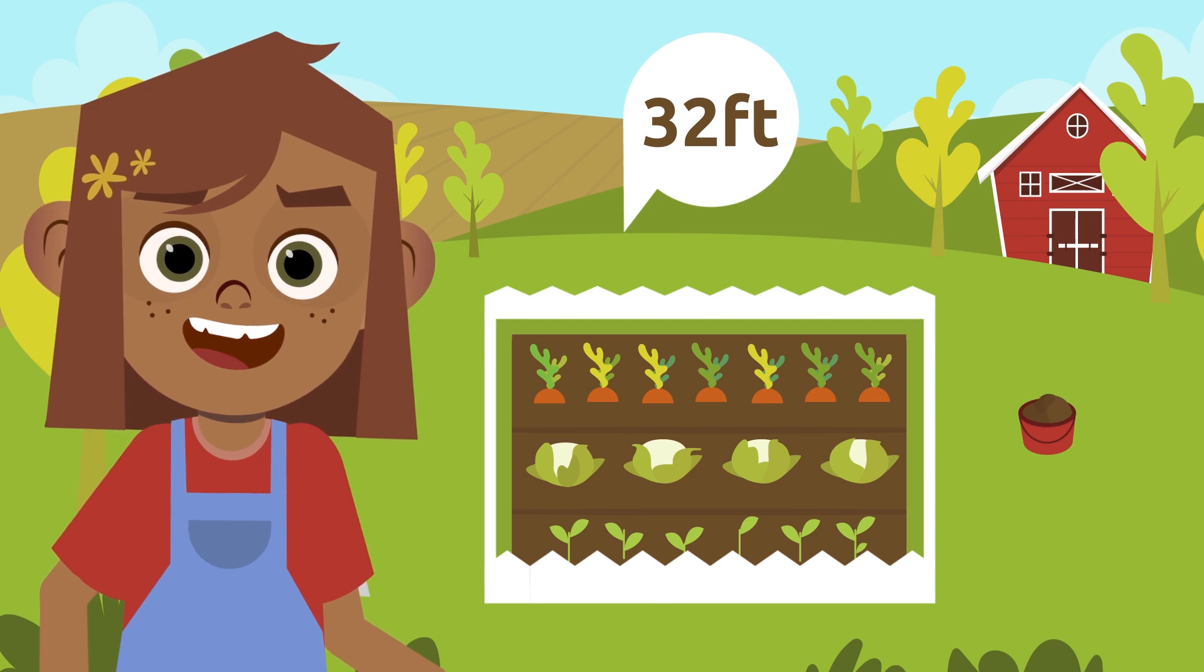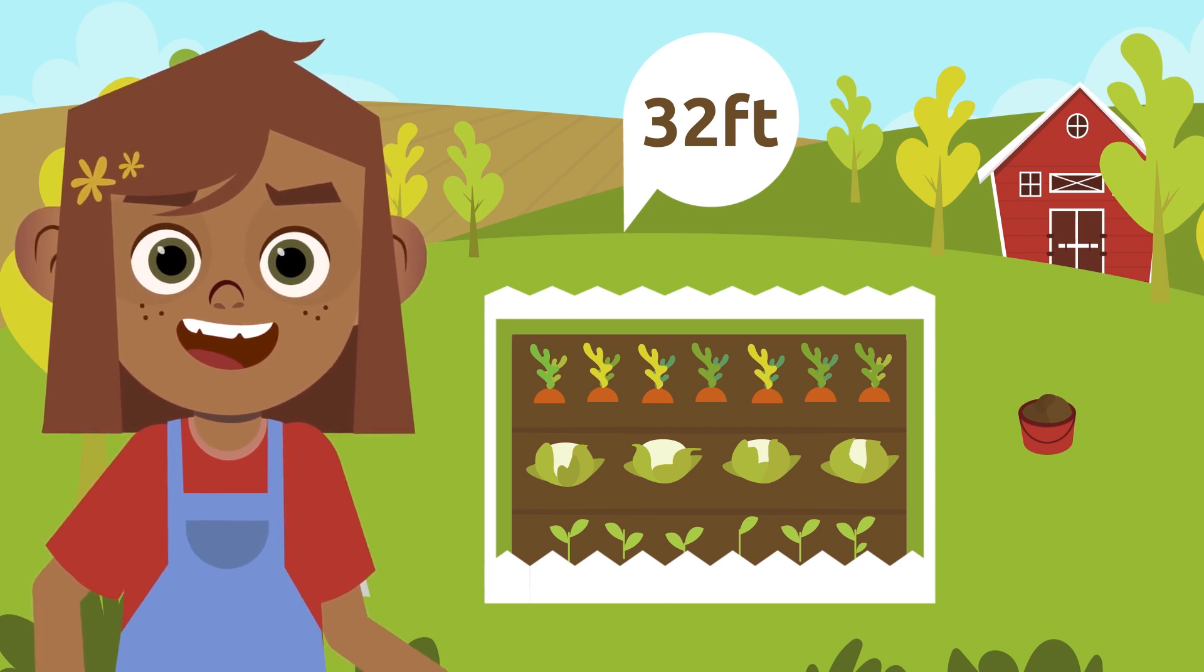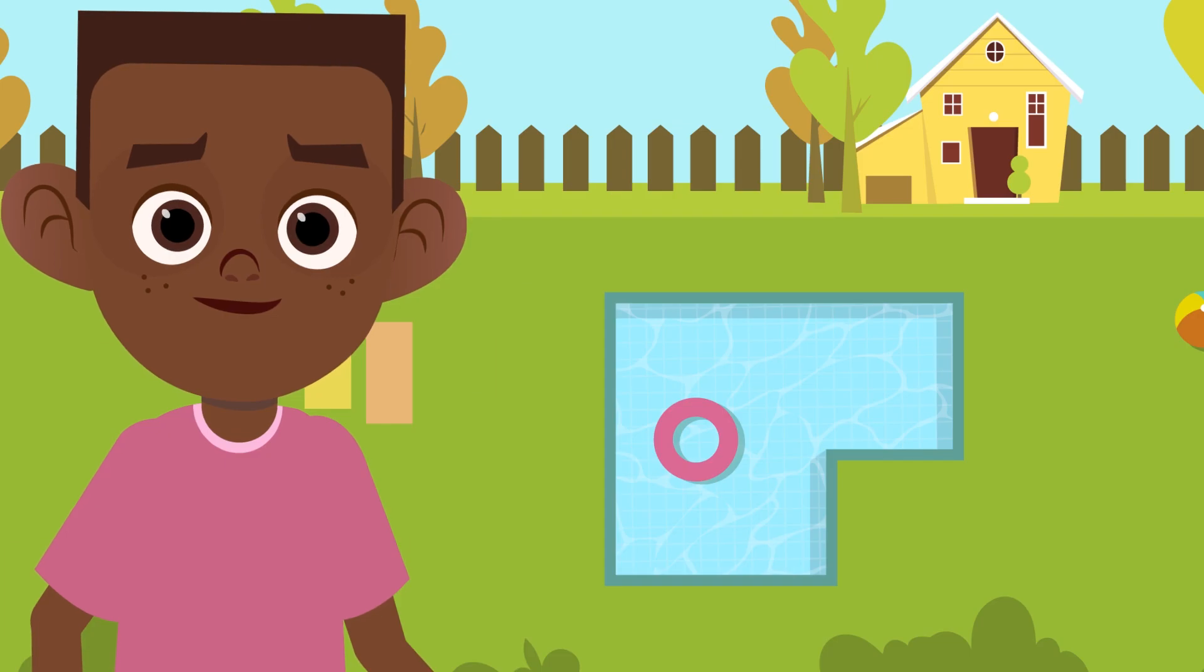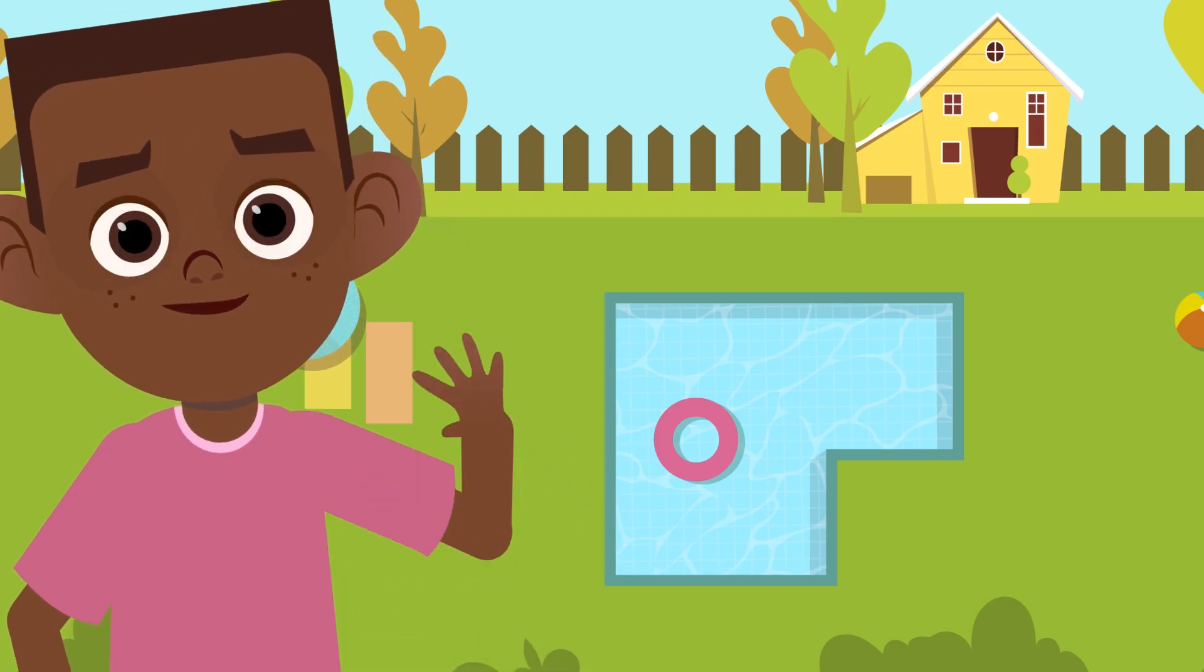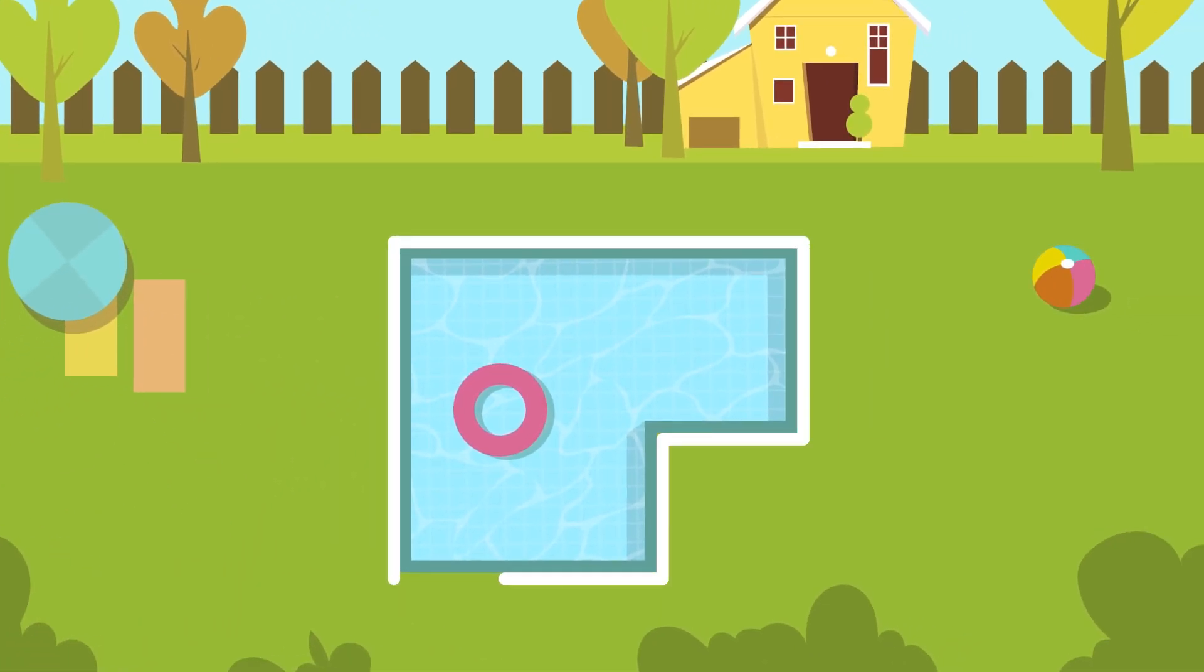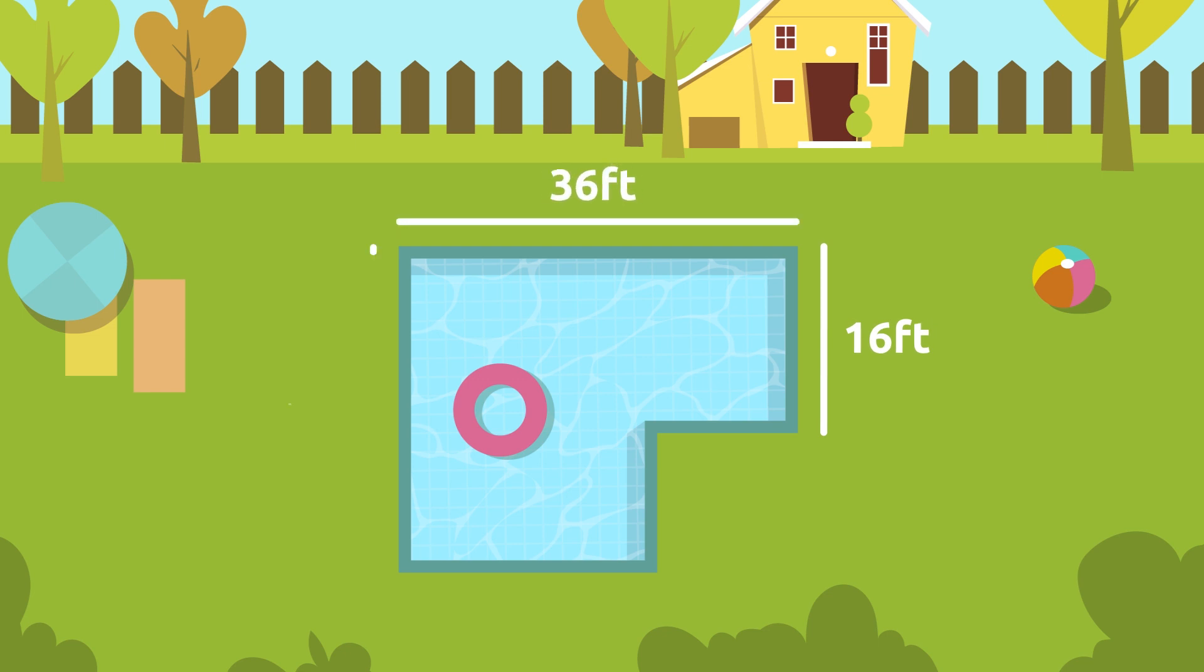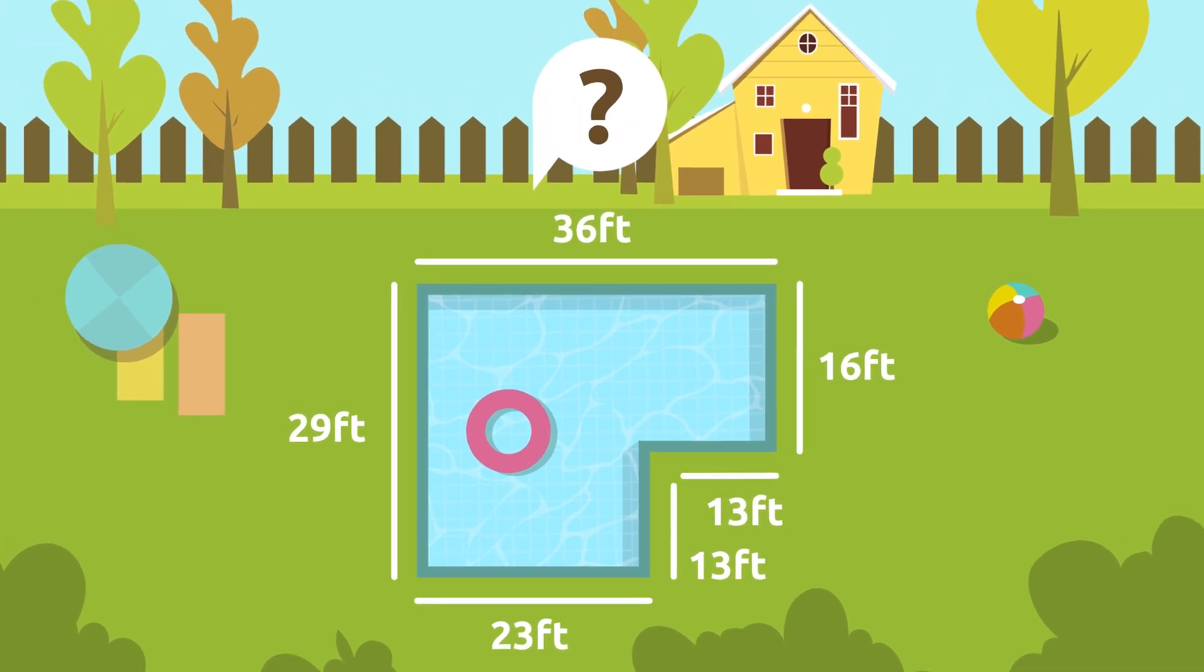Let's look at another example. John wants to glue white tape around his pool to separate it from the grass. The pool has this shape. Its sides measure 16 feet, 36 feet, 29 feet, 23 feet, 13 feet, and 13 feet. How many feet of tape does he need to buy?